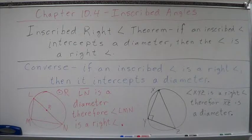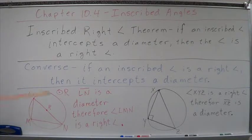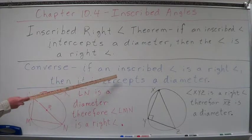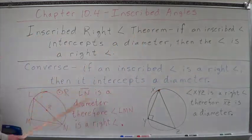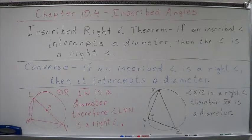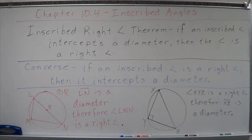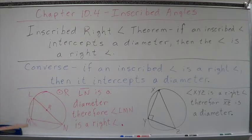If an inscribed angle intercepts a diameter, then the angle is a right angle. The converse is also true: if an inscribed angle is a right angle, then it intercepts a diameter. So both of those are true. If I have an inscribed angle and I know that it intercepts a diameter, then it's a right angle.